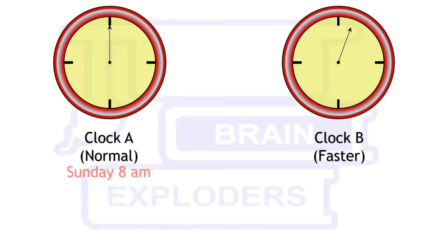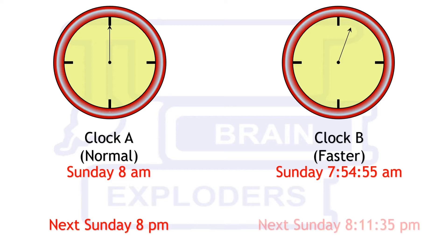On Sunday at 8 am, clock B is 5 minutes 5 seconds behind the normal clock, so the time on it is 7:54:55 am. Next Sunday at 8 pm, clock B is 11 minutes 35 seconds ahead.